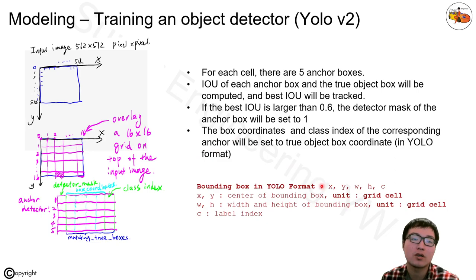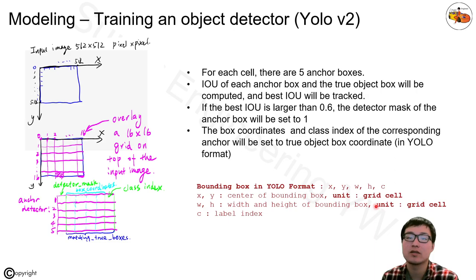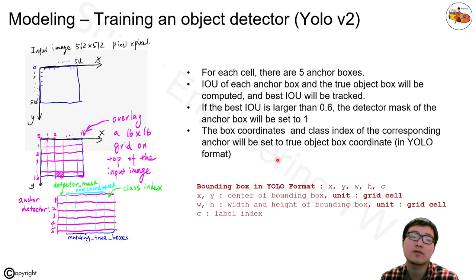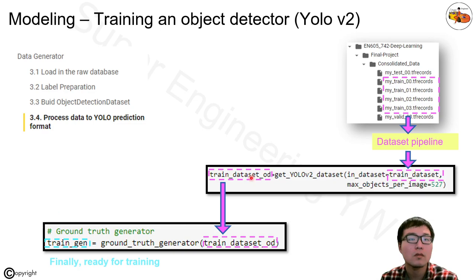The YOLO format uses the center-plus-width-and-height convention, with units in grid cells. In some cases if your data comes in the corner convention (X_min, Y_min, X_max, Y_max), you need to convert your corner-defined box into the center convention. All those conversions are covered by the corresponding function.